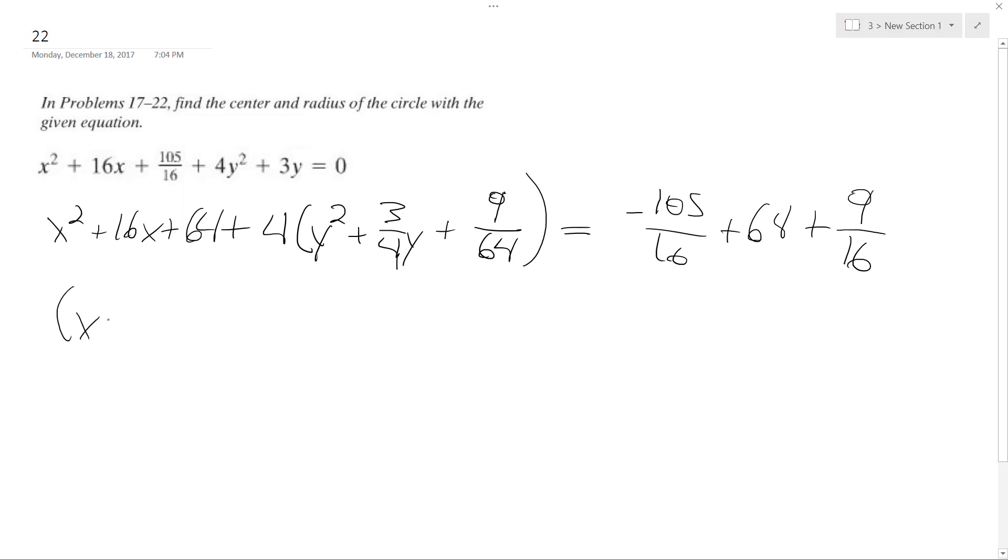So we have X plus eight squared plus quantity four Y plus three over eight squared.